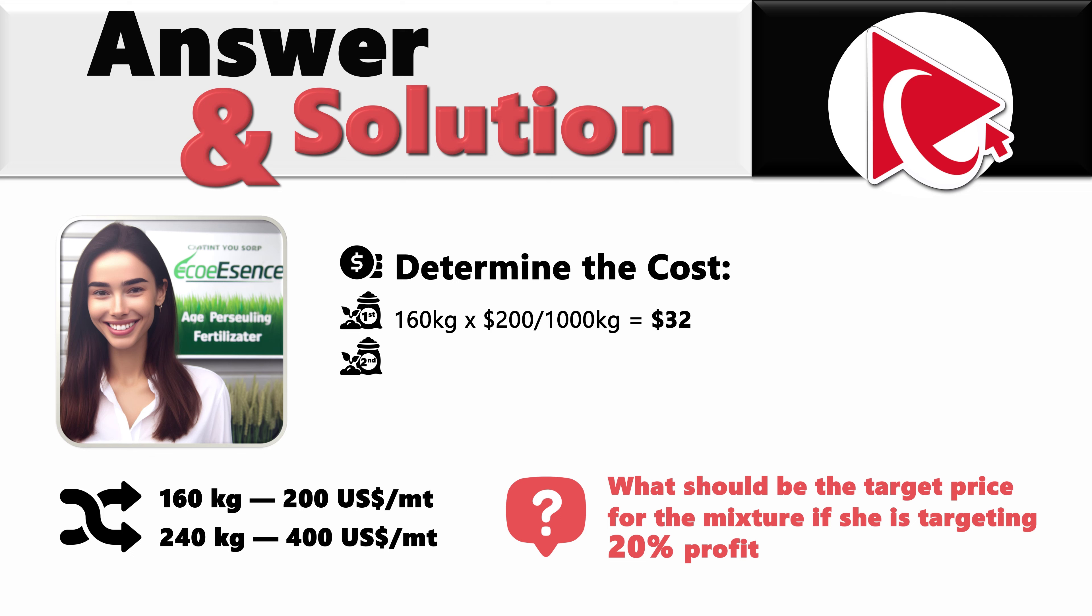For the second fertilizer, Michaela spent $96, which is calculated as 240 kilograms multiplied by 400 and divided by metric ton, which is 1000 kilograms, which equals $96. So the total spent for both fertilizers would be $32 plus $96, which is equal to $128.